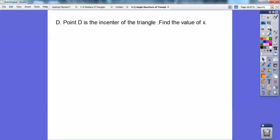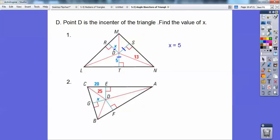Point D is the incenter of the triangle, find the value of x. This one's easy, you guys. If point D is the incenter right there, then this distance equals this distance equals this distance. 5x equals 5. That 13's there to distract you.